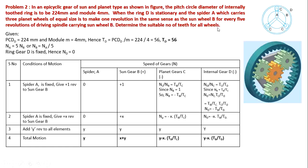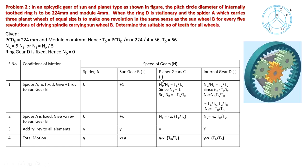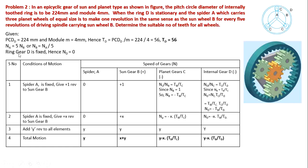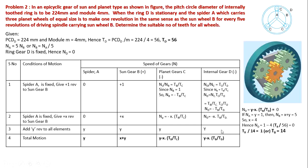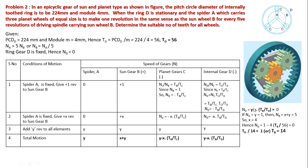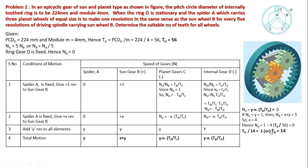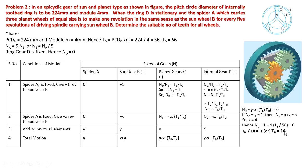We need to determine suitable number of teeth for all wheels. TD is already determined as 56. Using the condition NA equals 5NB: if Y equals 1 then X plus Y equals 5, giving X equals 4. Since ring gear D is fixed, ND equals Y minus X times TB/TD equals 0. Substituting X equals 4, Y equals 1, and TD equals 56, we can determine TB. Number of teeth on B, TB equals 14.